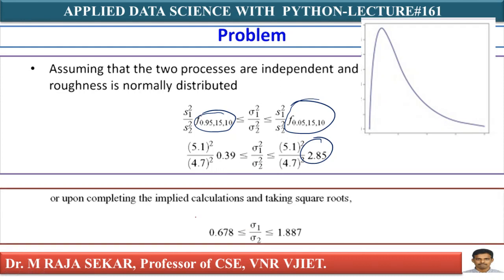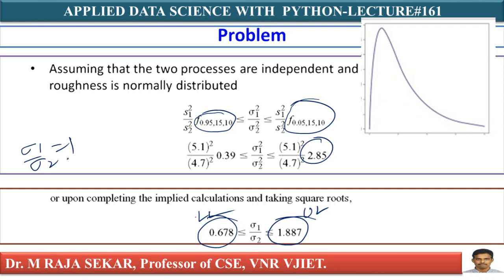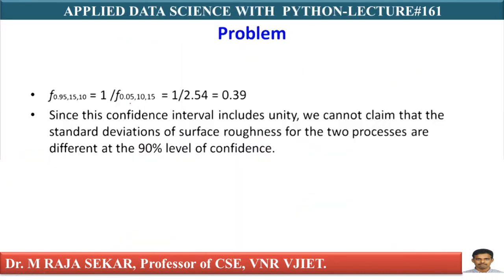The range 0.68 to 1.887 captures the value 1. Since 1 is found between the lower and upper limits, there is a possibility that sigma 1 divided by sigma 2 equals 1, meaning sigma 1 equals sigma 2. This means we accept the null hypothesis that sigma 1 equals sigma 2. Since the confidence interval includes unity (the number 1), we cannot claim that the standard deviations of surface roughness for the two processes are different at the 90% level of confidence.